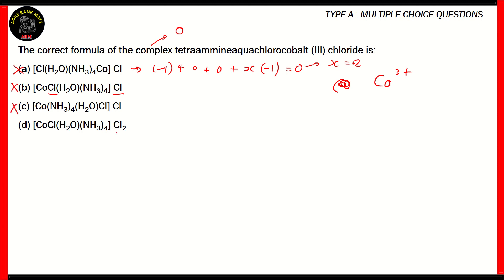However, in option D, you've got 2 chlorine atoms outside the complex and 1 inside. Now this will give us X plus minus 1 plus 0 plus 0 plus 2 times of minus 1. That gives you 0 on the right-hand side. So that means X minus 3 is 0, which means X equals 3. So therefore, for option D, CoClH2O NH3 4 times Cl2 is the correct formula of the complex tetraamine aquachlorocobalt 3 chloride.